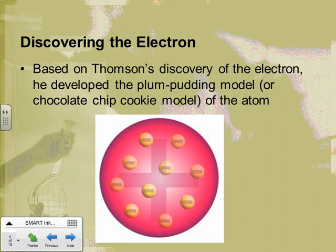His idea was: you've got this pudding — a sort of gelatinous, soupy-type thing — and that's what most of the atom is made of, and it's positively charged. Then you've got these little negative plums stuck in it. We might be more familiar with the chocolate chip cookie model: the cookie is positively charged, and the little chocolate chips are the negative charges. That was his model of the atom. Is that what we think today? No.